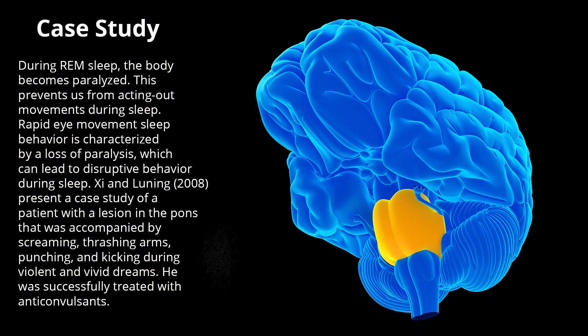During REM sleep, the body becomes paralyzed. This prevents us from acting out movements during sleep. Rapid eye movement sleep behavior disorder is characterized by a loss of paralysis, which can lead to disruptive behavior during sleep.